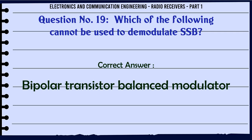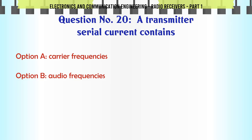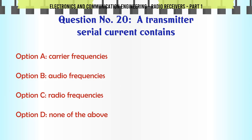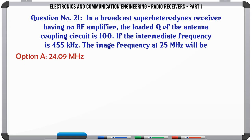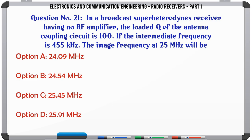A transmitter serial current contains: a. Carrier frequencies. b. Audio frequencies. c. Radio frequencies. d. None of the above. The correct answer is radio frequencies.